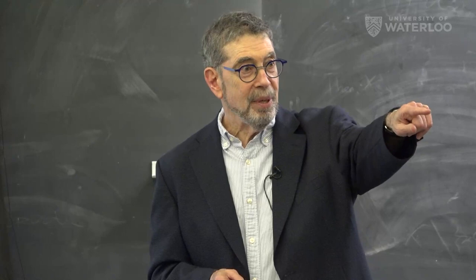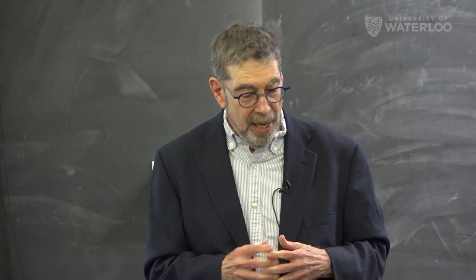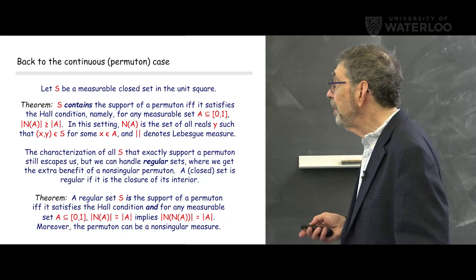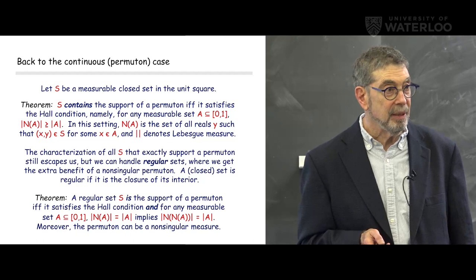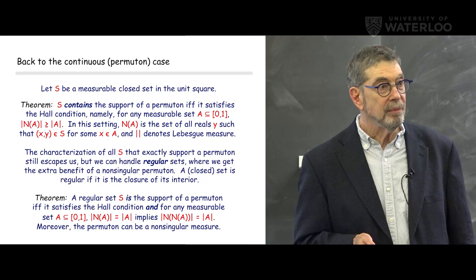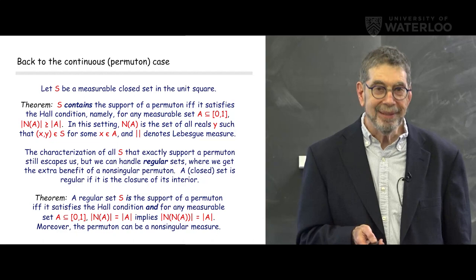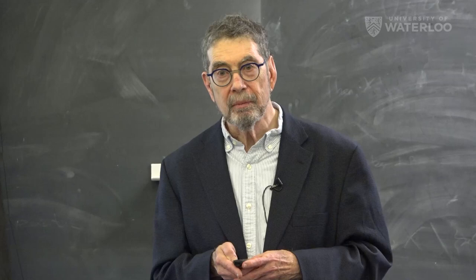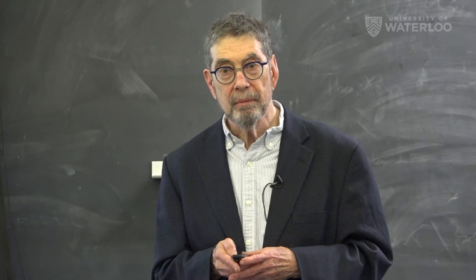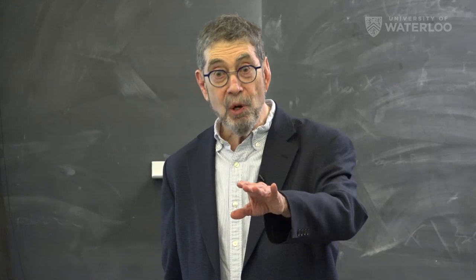Question about the first theorem: S contains the support of a permuton, right? And it's only for regular sets that you can prove the support is exactly S? Exactly right. Another question: what was the topology you put on the permutations? It's a pattern-density topology. You pick a pattern — some small permutation — choose random positions in the one-line description of a large permutation, and ask how they're ordered. The fraction ordered like a given pattern is its pattern density.